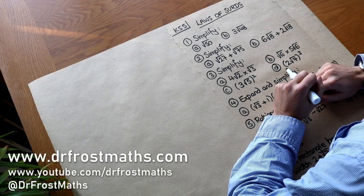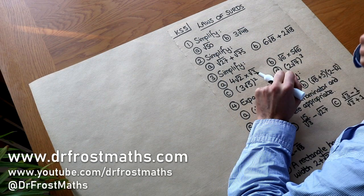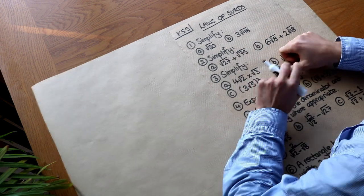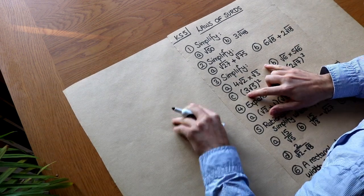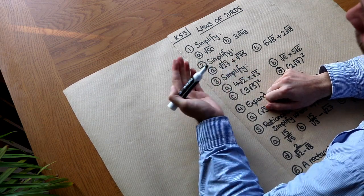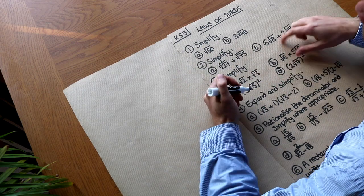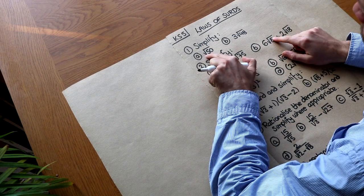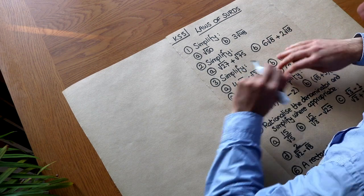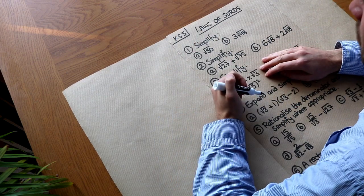Hello and welcome to this Dr. Ross from Maths video on Key Stage 5 Laws of Surds. The first skill that's very important is to simplify a surd. It's a bit like how we simplify fractions — if we had 3 over 6, we know we can divide top and bottom by 3 to get 1 over 2. Similarly with surds, we want to make sure that the number under the surd is as small as possible, just like with fractions.